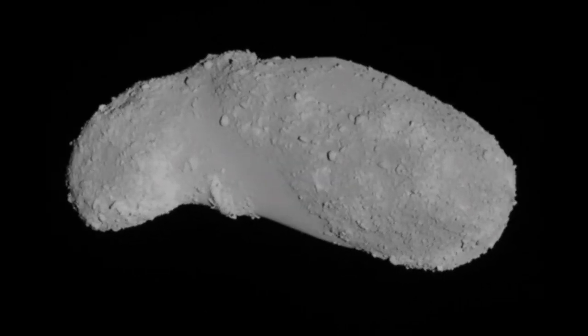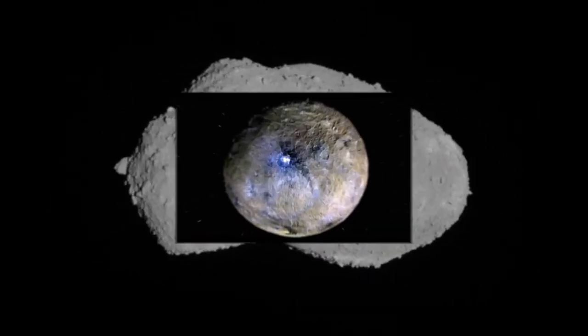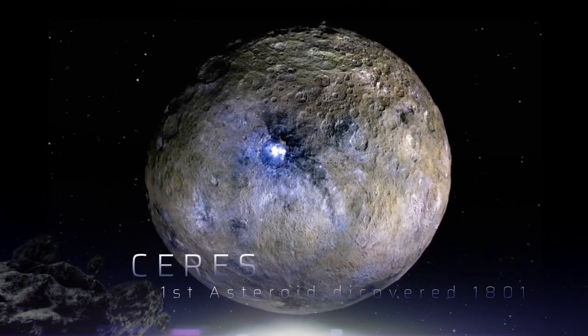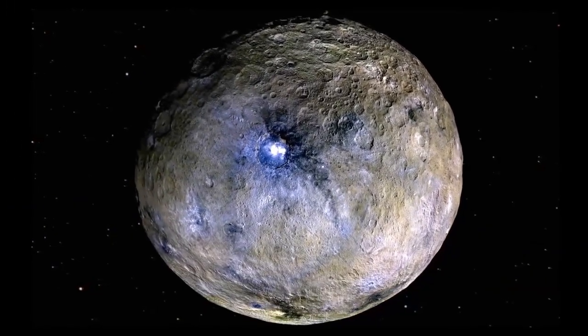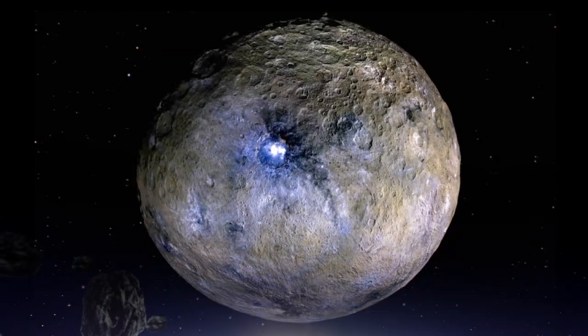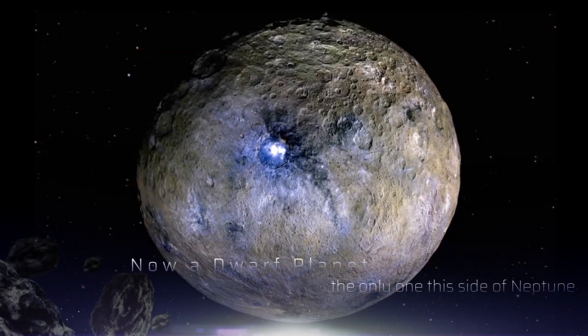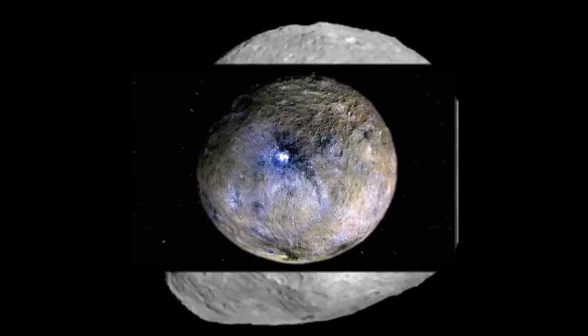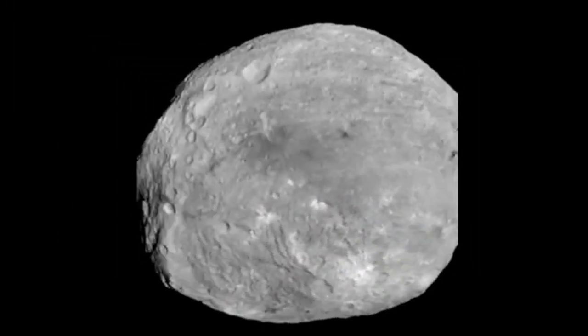Now the first asteroid was discovered in 1801 by Giuseppe Piazzi, and he named this object Ceres after the Roman goddess of the harvest. He thought he discovered a new planet, and Ceres is the largest of the asteroids — 933 kilometers, 580 miles in diameter — and today it's classed as a dwarf planet. In fact, it's the only dwarf planet that resides this side of Neptune generally.